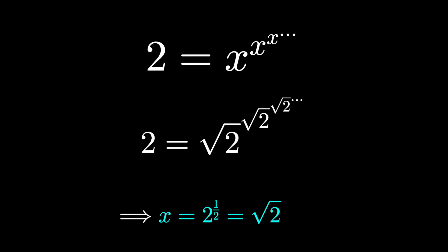A more rigorous way to prove that this is the solution is to set up this tower like a sequence. Consider the sequence 0, 1, root 2, root 2 to the power of root 2, root 2 to the power of root 2 to the power of root 2, and so on.